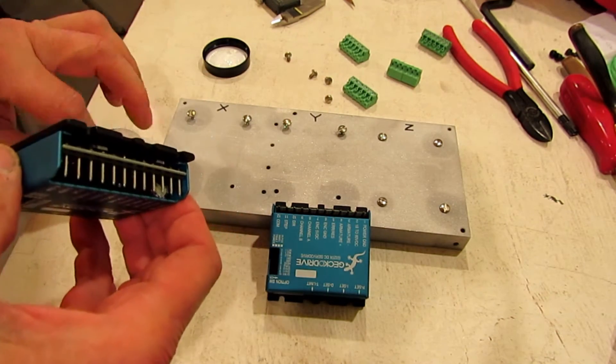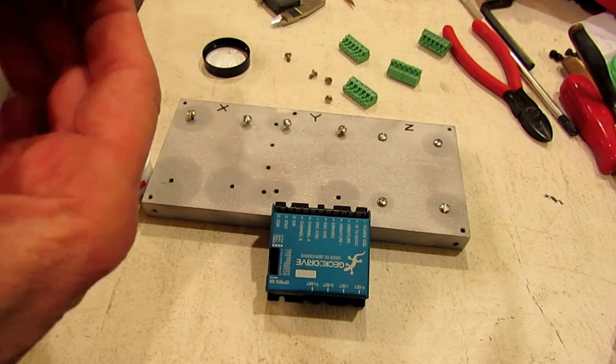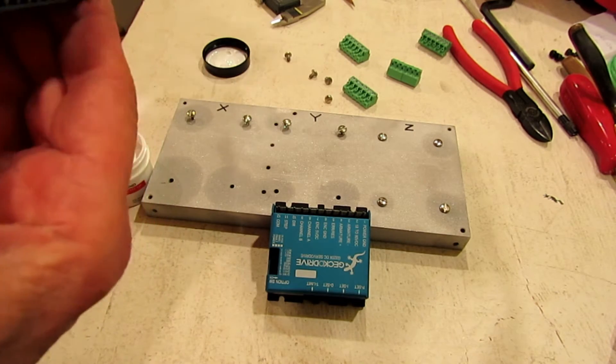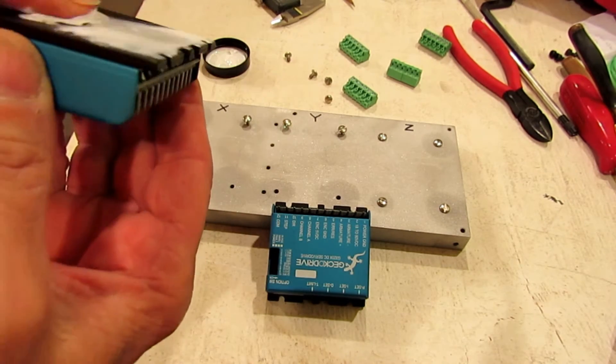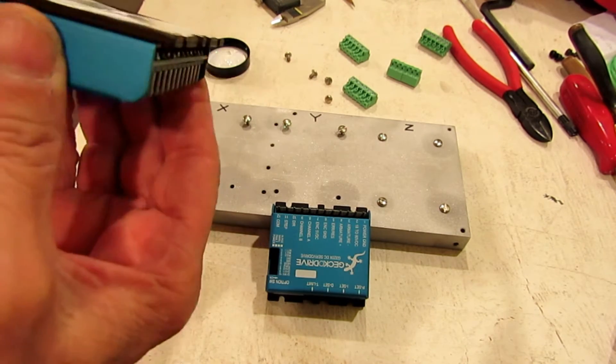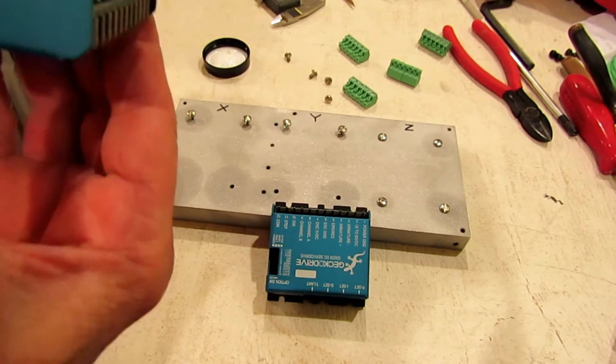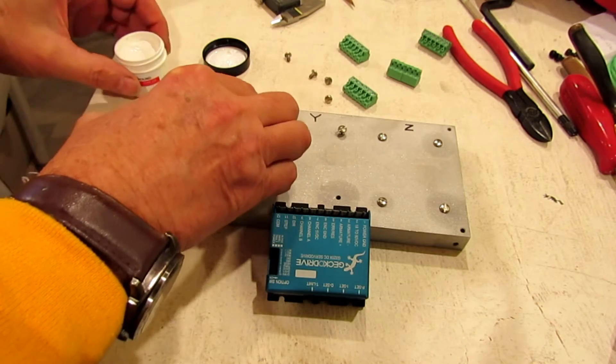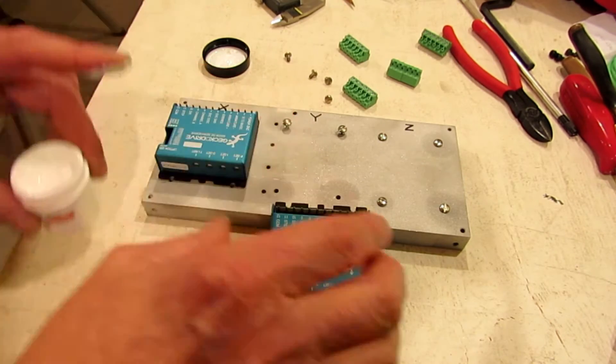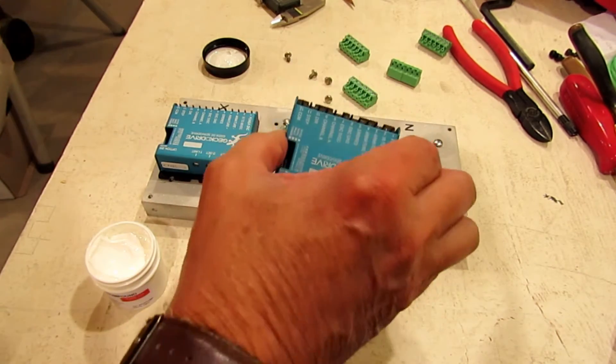I'm just gonna spread a little bit out on the back of each one to give me a good thermal transfer to the heat sink, hopefully give them a little better life. I'll put that on there and then I'm just gonna mount these in place, screw them down, and put the heat sink back into the tool.